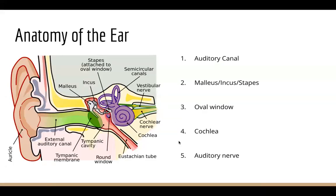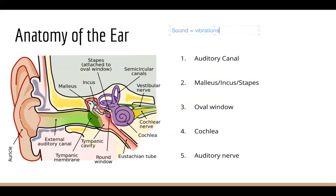Hi everyone, in this video I'm going to be going over the anatomy of the ear. Sound is nothing but vibrations — this is really important to understand. What our auditory system does is convert sound and vibration energy into electrical impulses, which is a process called transduction.